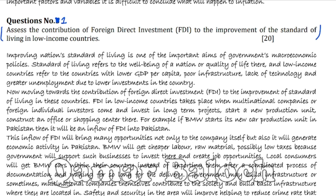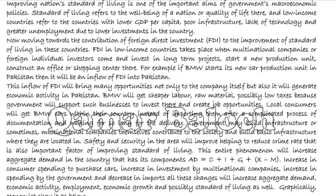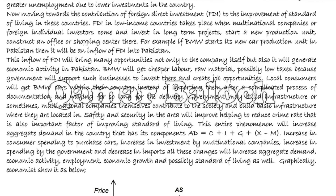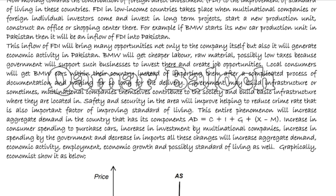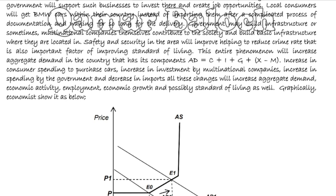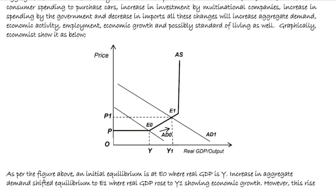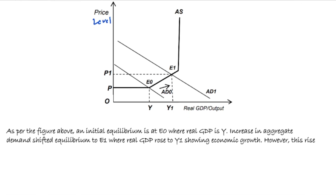You can read the statement of the question and take a screenshot if you wish, or pause the video to read and then play again. Initially, you explain the basic knowledge, then move to the analysis part. Using the aggregate demand and aggregate supply framework — whenever there is an increase in foreign direct investment, globalization, or local investment — aggregate demand shifts to the right and equilibrium moves from E0 to E1.